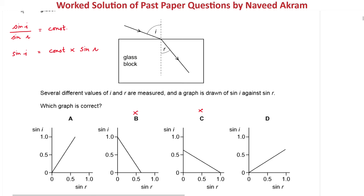The ray is entering from air into glass, which means this ratio is equal to the refractive index of the glass — that is, sine i over sine r equals n, the refractive index of the glass. To find n from the graph: since sine i is on the y-axis and sine r is on the x-axis, if we take the slope of this graph, we get the refractive index of the glass.